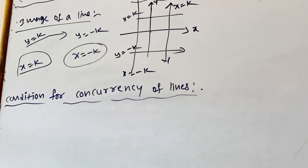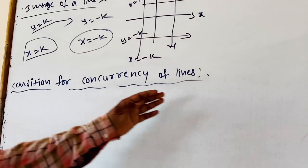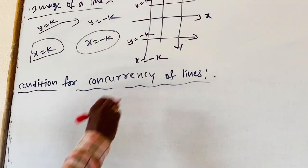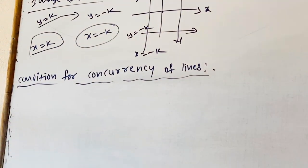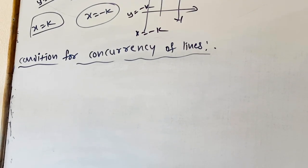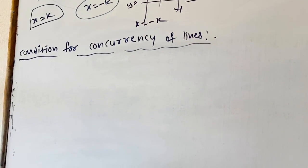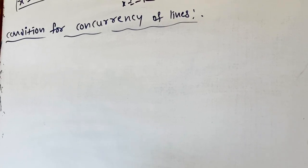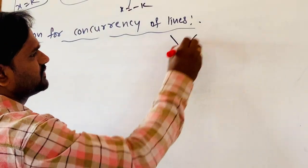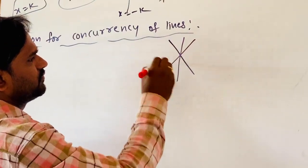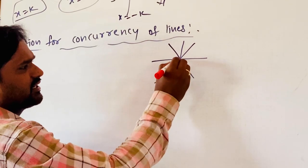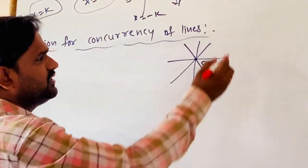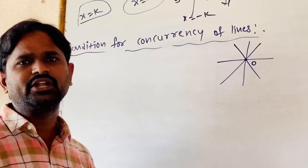Now we will find the condition for concurrency of lines. What is meant by concurrency? Two or more lines intersecting at a point is known as the point of concurrence, and these lines are known as concurrent lines. These lines are intersecting at O; O is the point of concurrence.